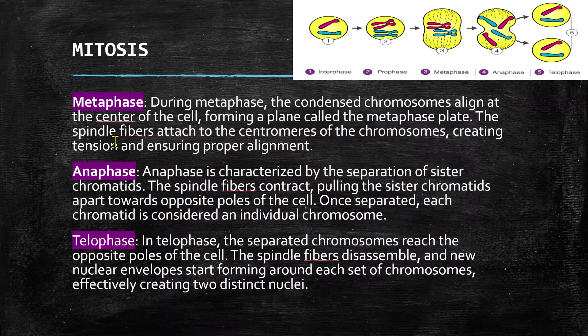Then we have anaphase. Anaphase is characterized by the separation of sister chromatids. The spindle fibers contract, pulling the sister chromatids apart towards opposite poles of the cell. Once separated, each chromatid is considered an individual chromosome.